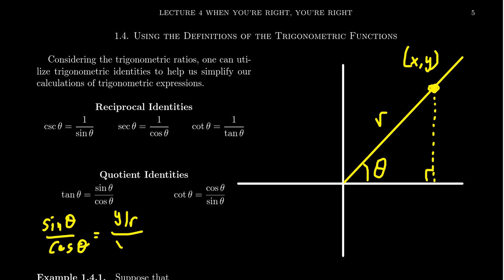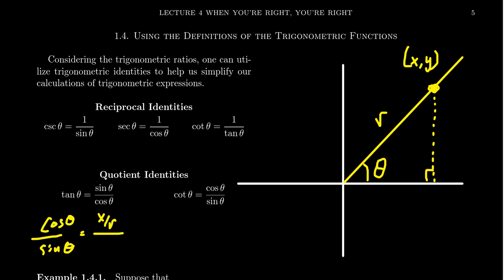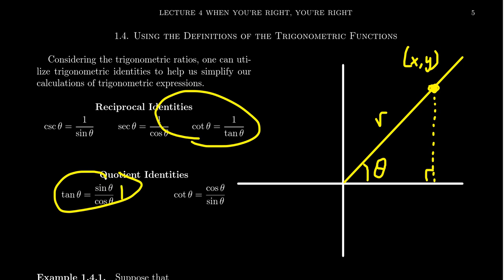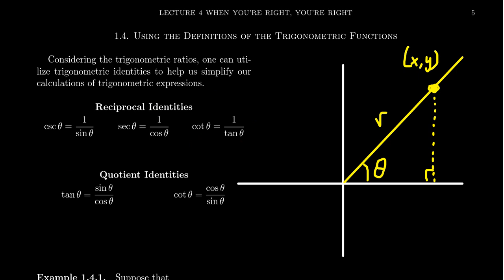A similar calculation can be done with cotangent. If we take cosine theta over sine theta, this looks like x over r divided by y over r. Cancelling, we get x over y, which is exactly the cotangent ratio. So sine over cosine gives us tangent, and cosine over sine gives us cotangent. If you know the first quotient identity and take its reciprocal, you just get cotangent — flip the fraction upside down. These are some of the simplest and most elementary of the trigonometric identities.